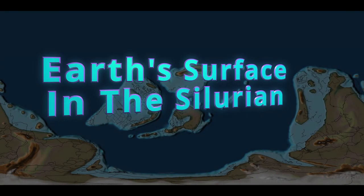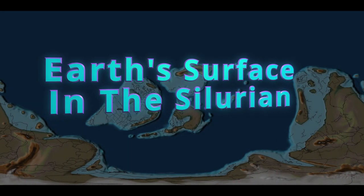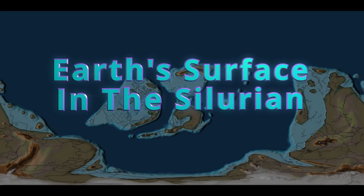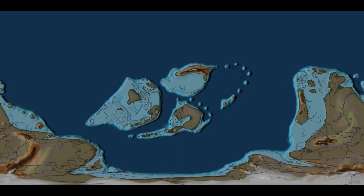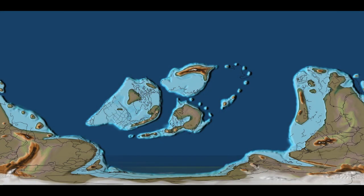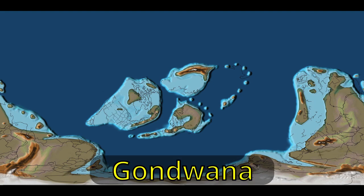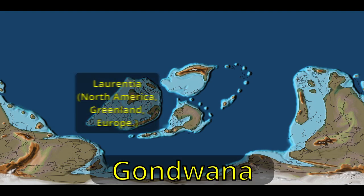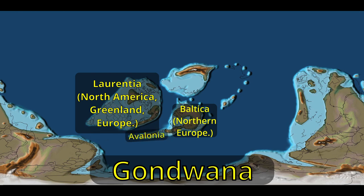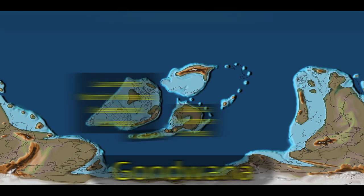Before approaching land life and some of the rest of Silurian life, let's get a basic sense of the situation at Earth's surface. The Silurian period saw a layout of the continents with the massive continent of Gondwana in the south, and over and near the equator you have Laurentia, which consists of North America, Greenland, and a sliver of Europe; Baltica, Northern Europe; and Davilonia, the east coast of North America and a little of Europe again.